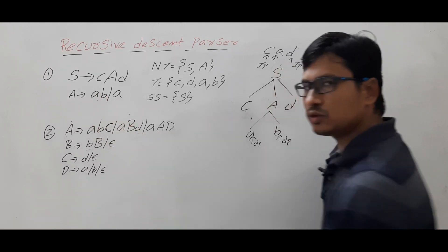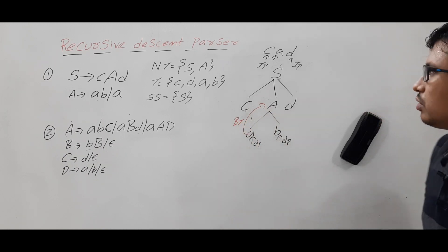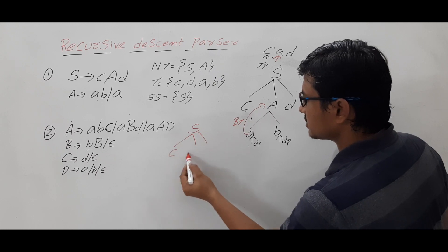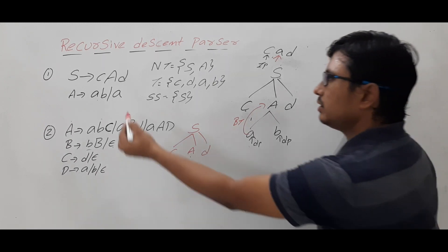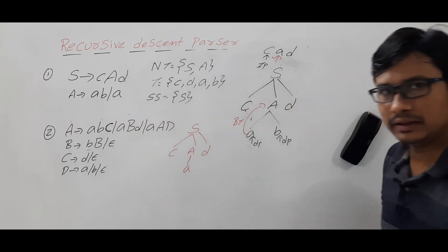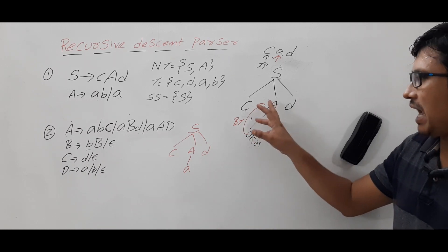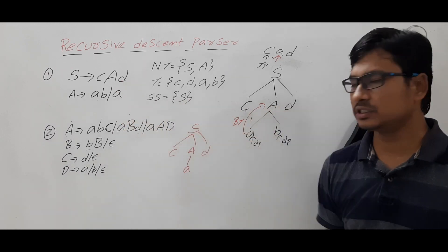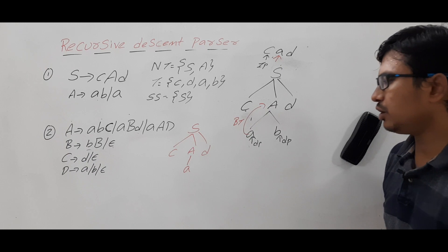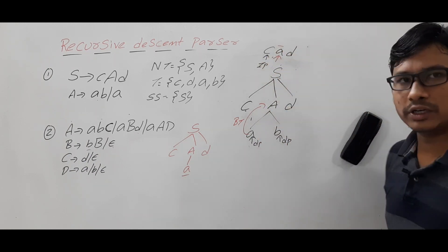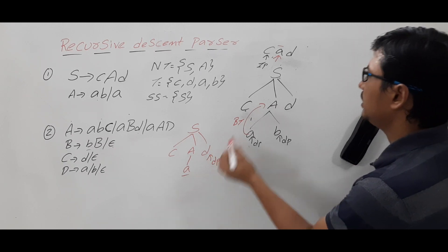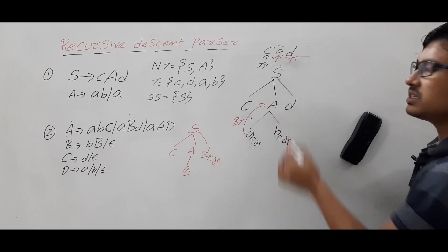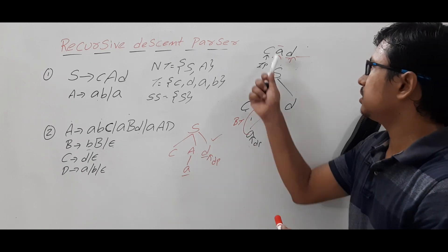If the descent pointer and input pointer are not matching, it means the decision taken was wrong, so you go for backtracking — also called rollback. Now the input pointer is pointing here. Looking at the parse tree so far: 'cad'. The descent pointer is pointing to a non-terminal so it takes a production. Because of backtracking, it goes back and checks what other productions are available. The other production is A → a. Again there is a match, so the descent pointer and input pointer shift, and the string ends — the parse tree is complete.